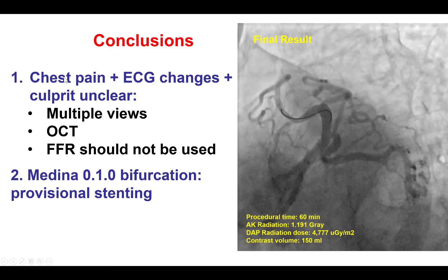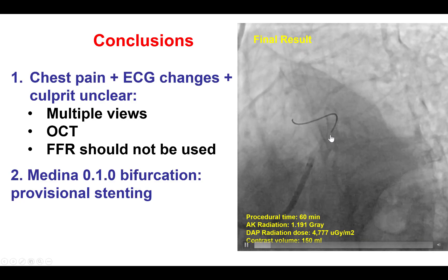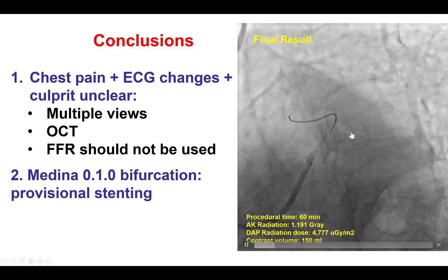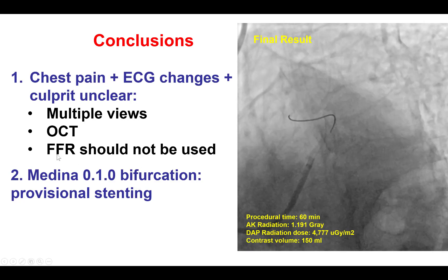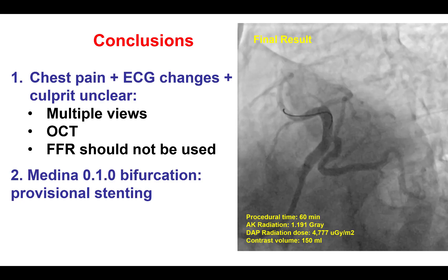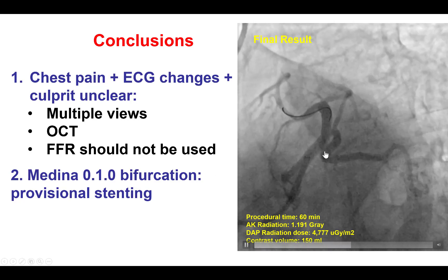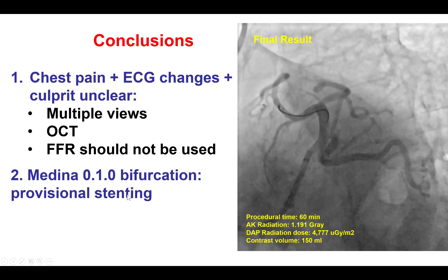So, what to do when a patient is having symptoms suggestive of ACS but does not have a clear culprit? Multiple angiographic views is the first step — in this case, the ostium of the LAD appeared to have a lesion in some projections but not others. Imaging, preferably with optical coherence tomography, is the preferred way to look for stenosis and, more importantly, to detect the presence of intracoronary thrombus that qualifies the lesion as a culprit. Functional assessment with FFR or resting indices should not be done in patients with suspected acute coronary syndromes, because coronary resistance can change dynamically and a negative result may not be reassuring. Finally, when treating a Medina 010 bifurcation lesion, provisional stenting is the preferred approach.